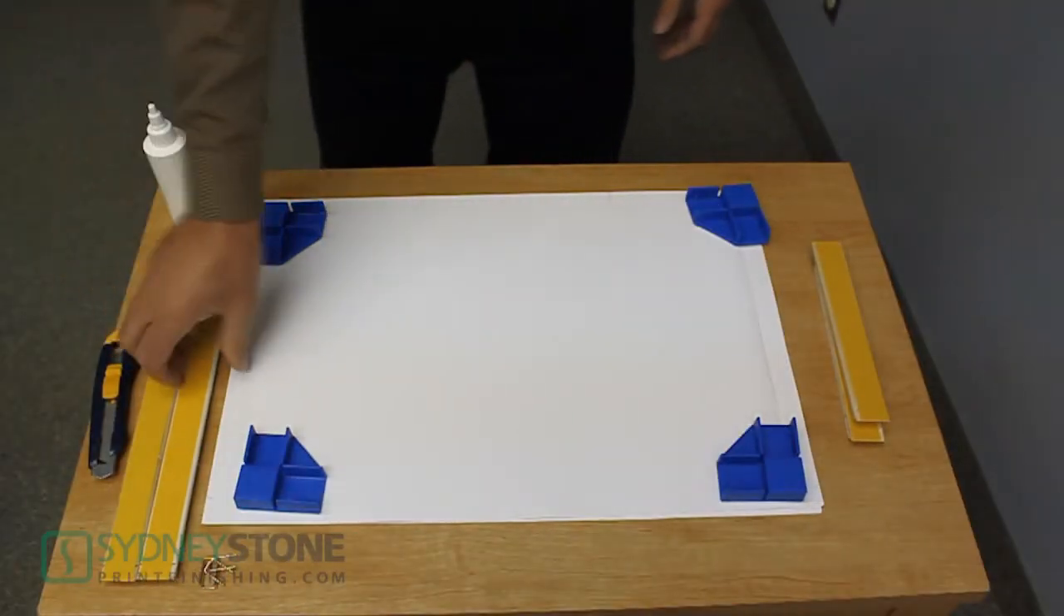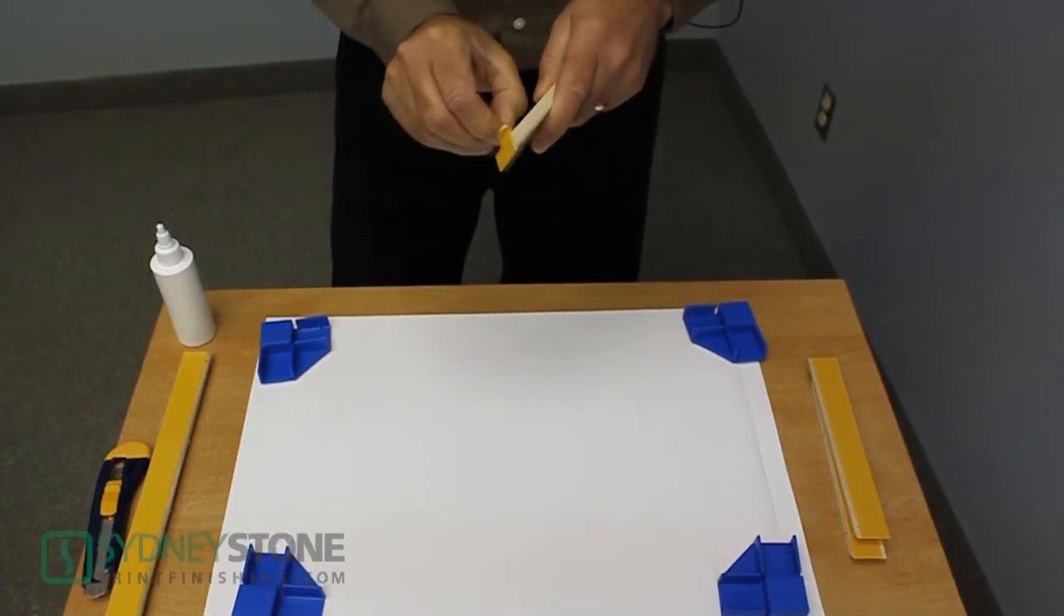We start by taking the frame pieces and peeling back the release liner on the ends only, and then pressing them into the corner brackets.